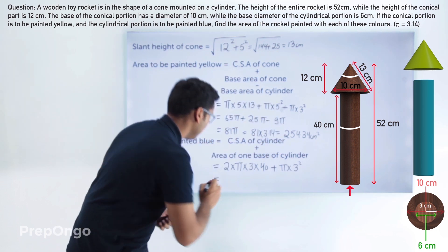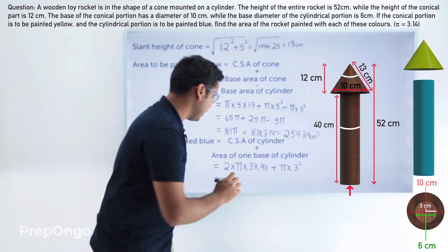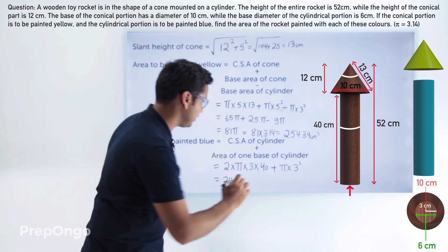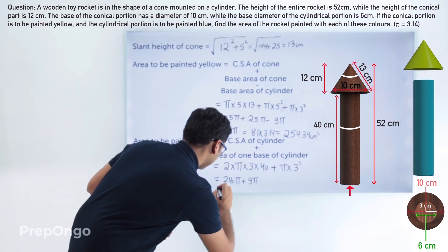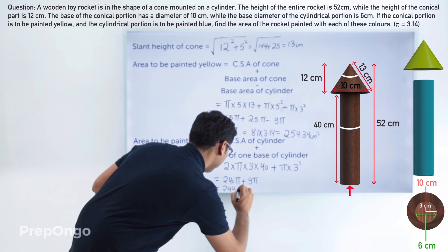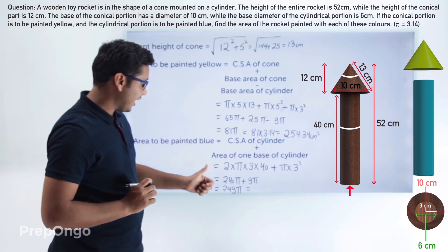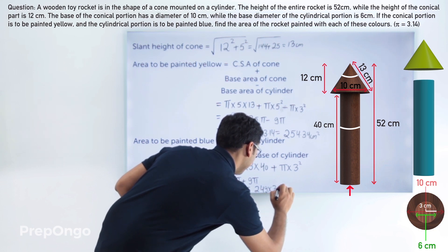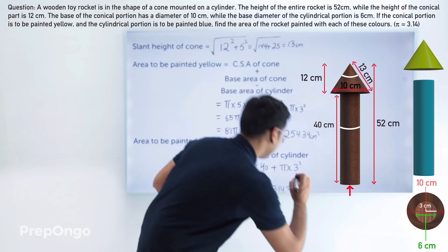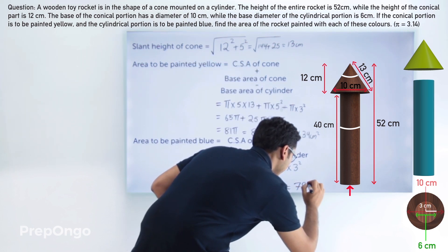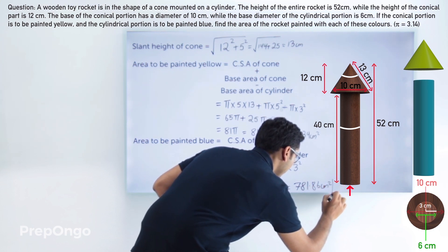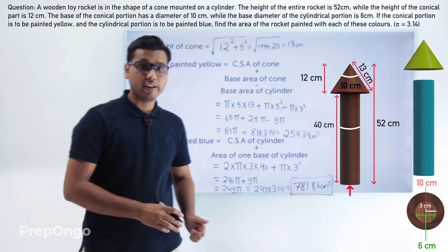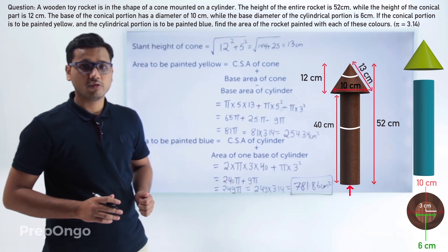Let's solve this. 2 × 3 × 40 = 240, so we get 240π. Adding the base area of 9π gives us 249π. With π = 3.14, this is 249 × 3.14, which comes out to be 781.86 centimeters squared.